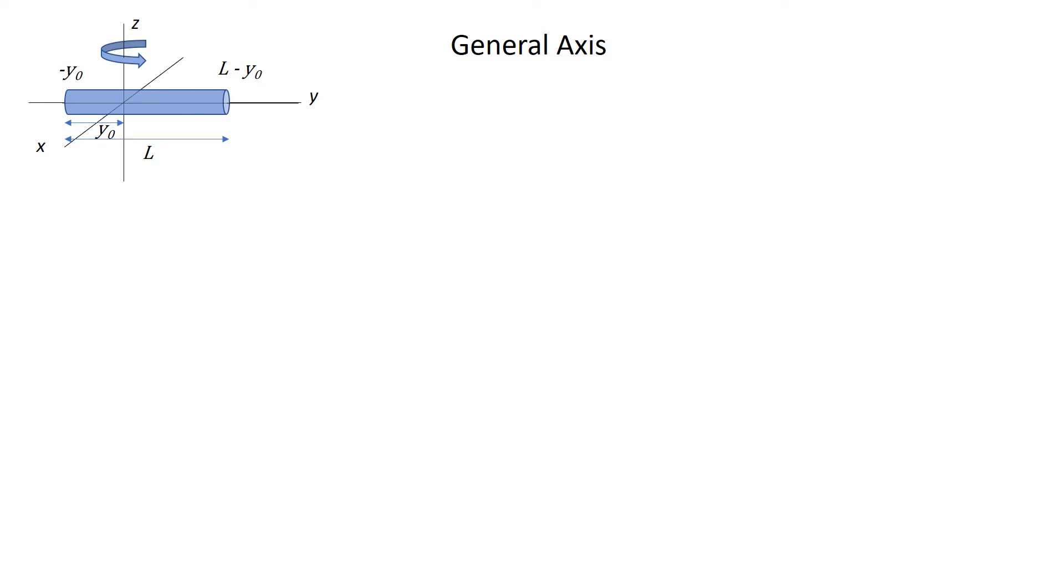I have put the rod in a configuration where there's a length of y0 to the left of the z-axis. The rod is a total length of capital L, which makes the rightmost part at a distance of L minus y0.